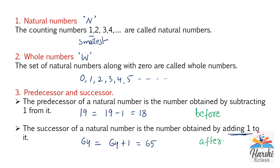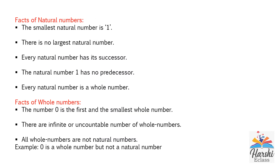Let's see a few important facts related to natural numbers and whole numbers. Facts of natural numbers: natural numbers are nothing but counting numbers, starting from 1, 2, 3, 4, 5, 6 — they are infinite and uncountable. The smallest natural number is 1, since natural numbers start from 1.